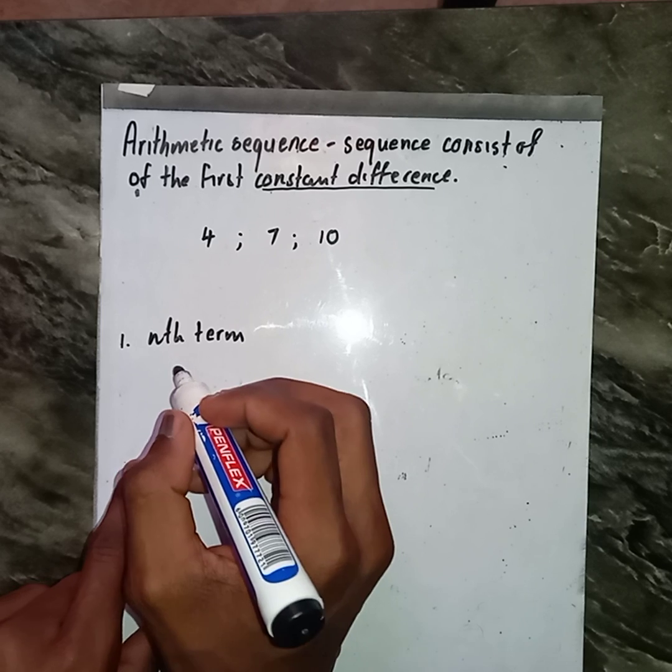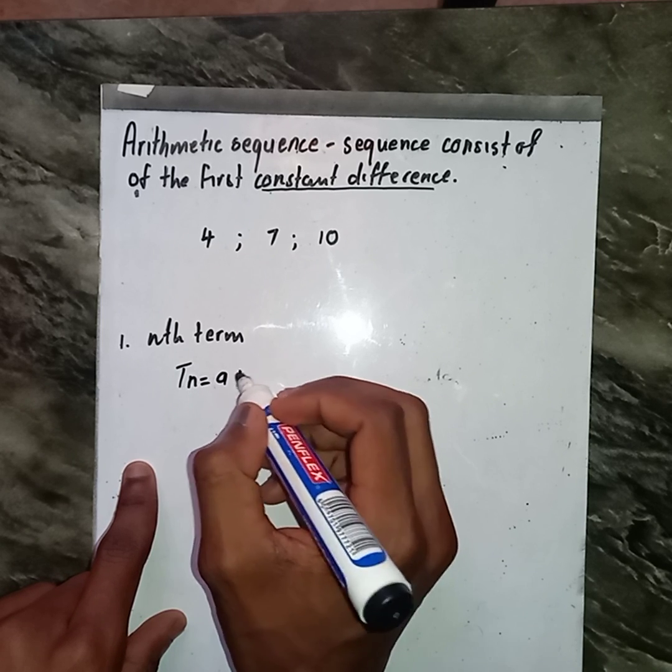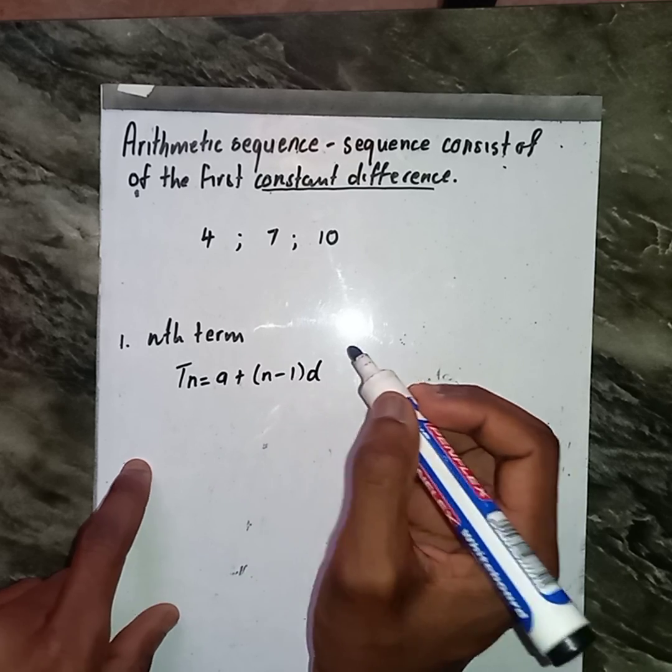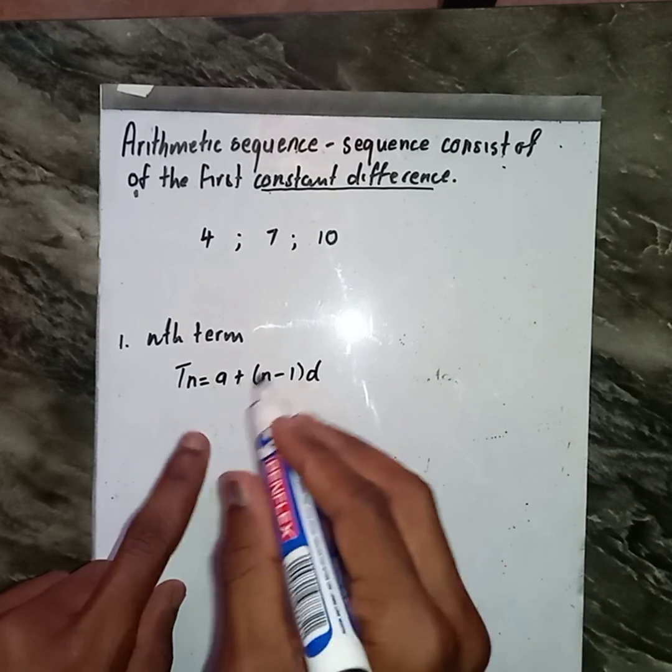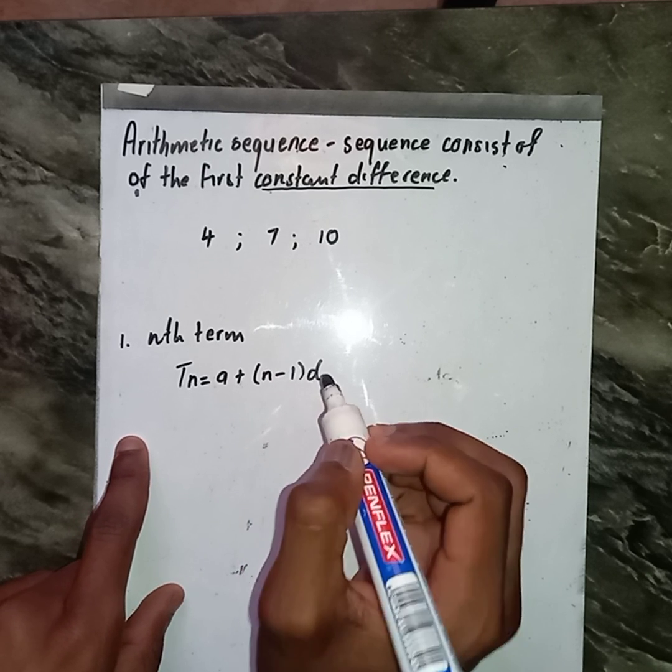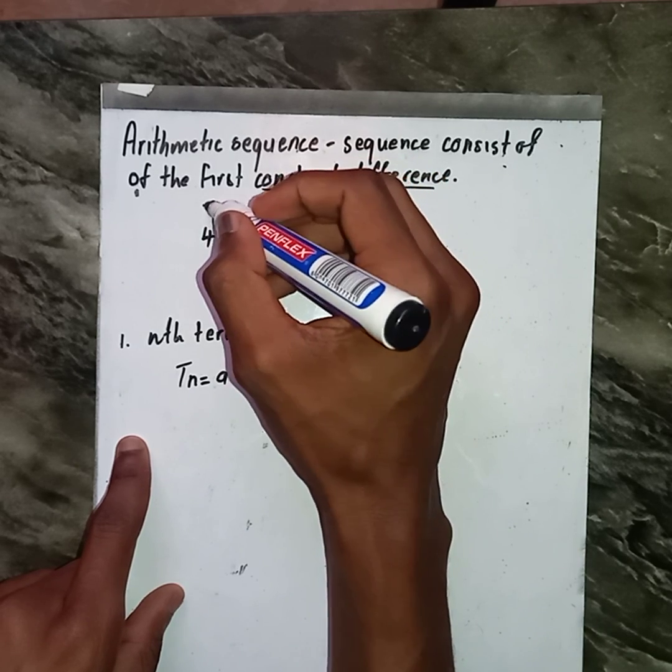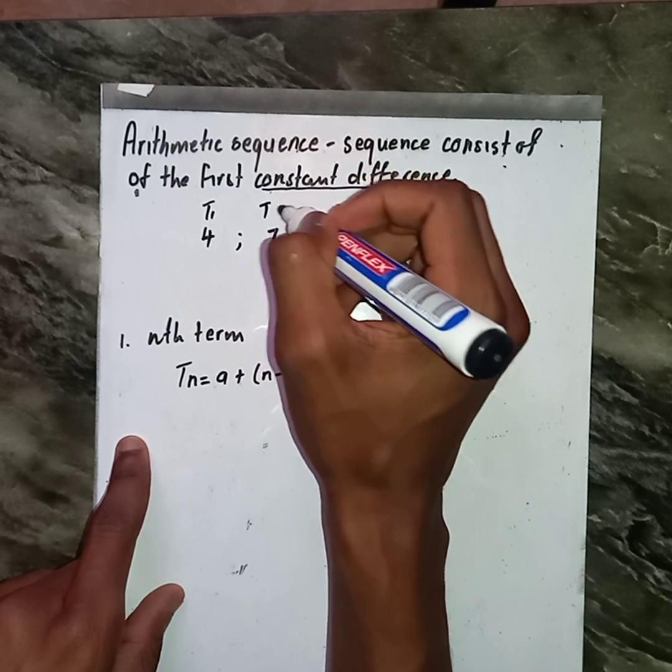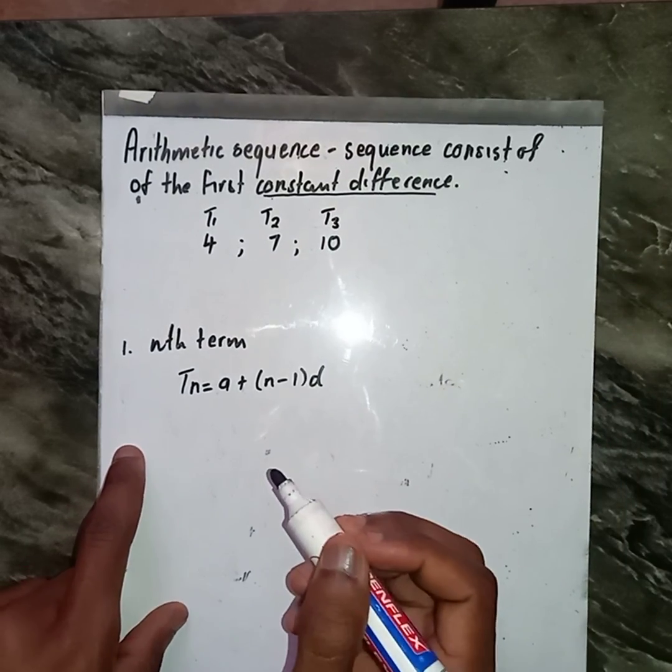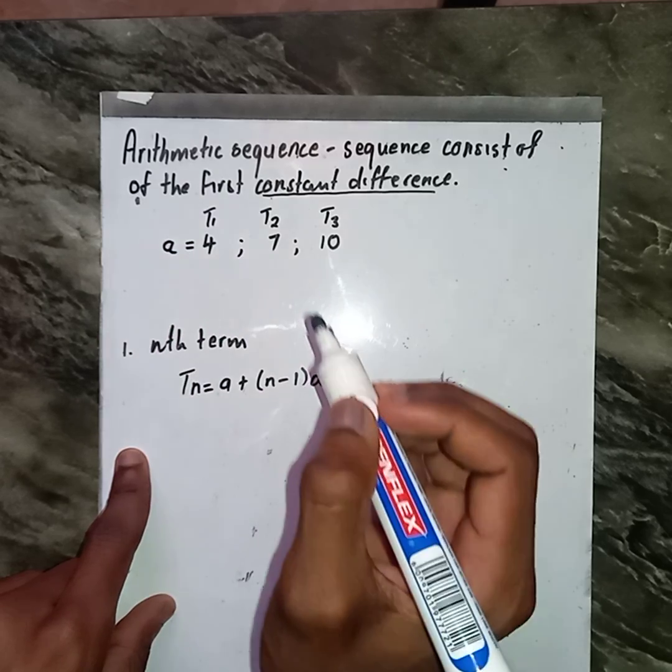Firstly, we know that our general term is given by Tn = a + (n - 1)d. From this given equation, we must find the value of d. We also need to find the value of a. We know that this is going to be term 1, term 2, term 3. And again, our first term is going to be a.